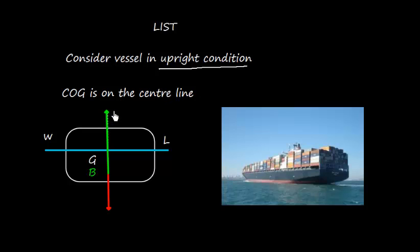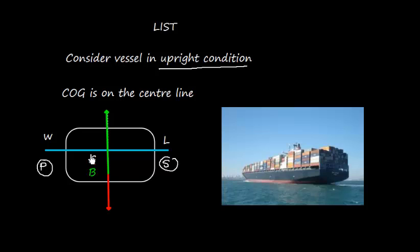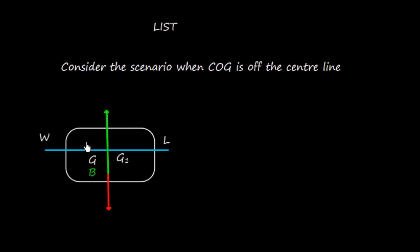The vessel can be upright if the COG is on the centerline, which means the weight on the port side is equal to the weight on the starboard side — or simply, the weight is distributed symmetrically. Now let us consider the scenario where the COG is off the centerline.